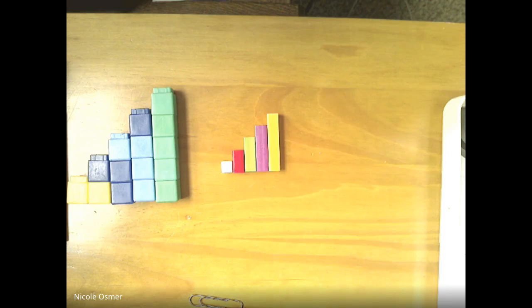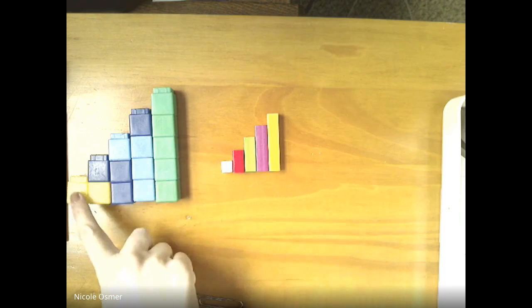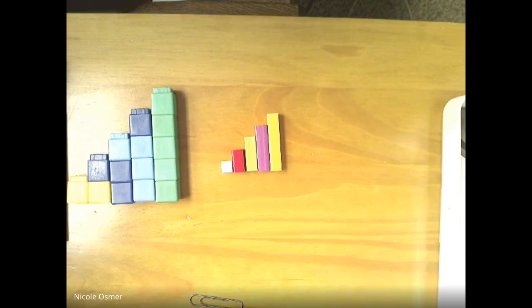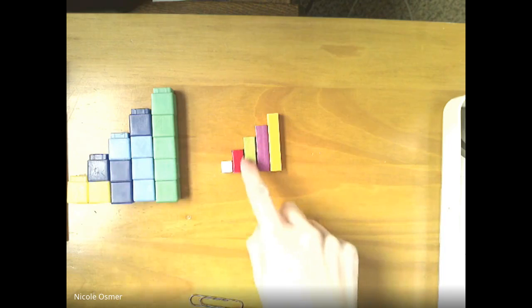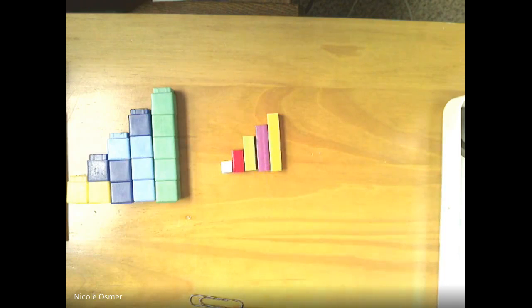And we can compare them. We know that one is white, two is red, three is light green, four is purple, and five is yellow. Very good.